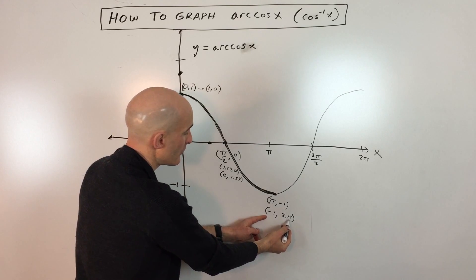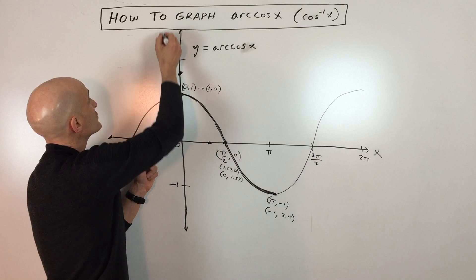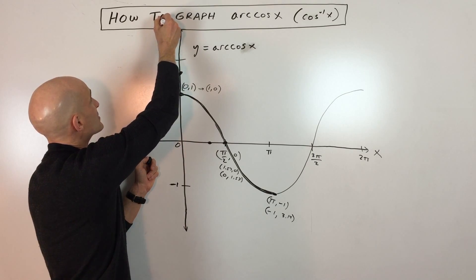And then this point, negative one, 3.14, we're going to go left one, which is right about there. 3.14, it's going to be right up over here somewhere.